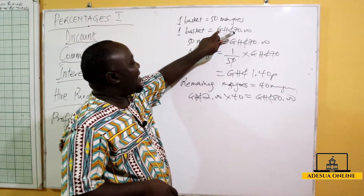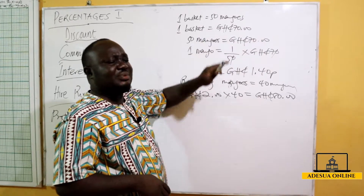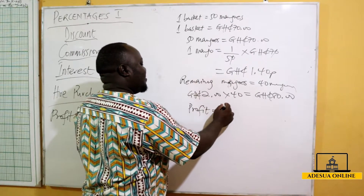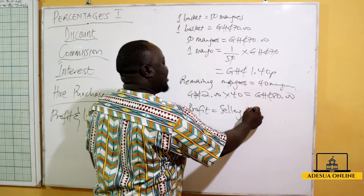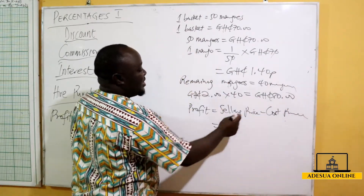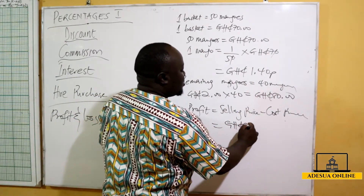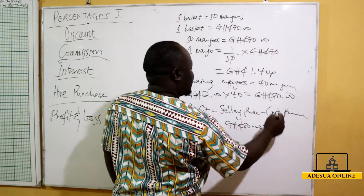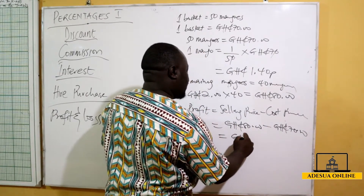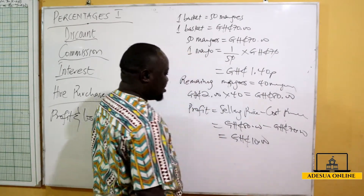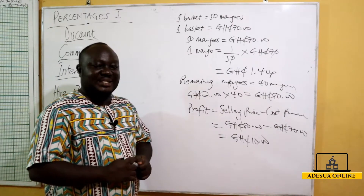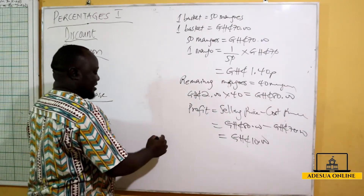This is the amount I'm getting, and this is how much I bought the mangoes for, so it means I'm making a profit. My profit is equal to my selling price minus my cost price. My selling price is 80 cedis minus the cost price of 70 cedis, so my profit is equal to 10 cedis. This is my profit after selling the mangoes for 2 cedis each.